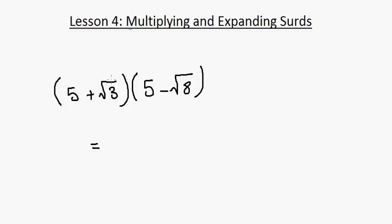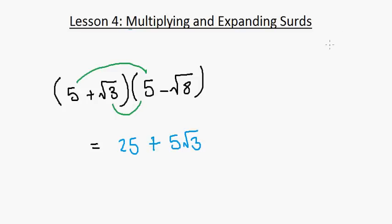Let's try another example, slightly harder because it includes negative signs and not all surds. We have 5 times 5, which is 25, and root 3 times 5 which is 5 root 3. Note: write it as 5 root 3 rather than root 3 5, to avoid it being misread as root 35.